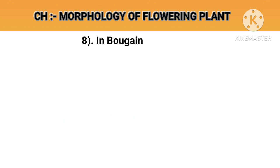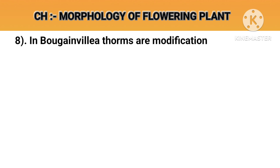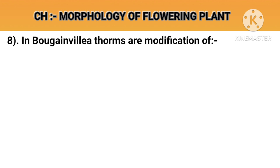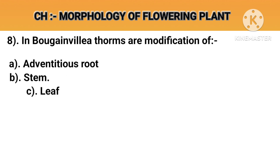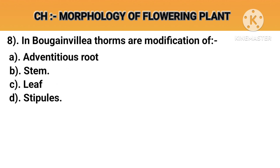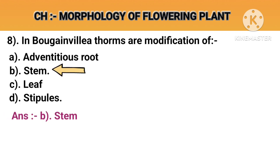Question number 8. In bougainvillea, thorns are the modifications of. Option A: Adventitious roots. Option B: Stem. Option C: Leaf. Option D: Stipules. Answer B: Stem.